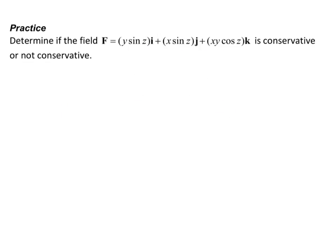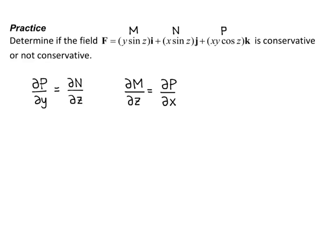Here's our second practice: Determine if the field capital F equals y sine of z, i, plus x sine of z, j, plus xy cosine of z, k, is conservative or not conservative. So here's my m, n, and p — the i, j, and k components respectively. And my criteria: partial p partial y equals partial n partial z; partial m partial z equals partial p partial x; and partial n partial x equals partial m partial y.